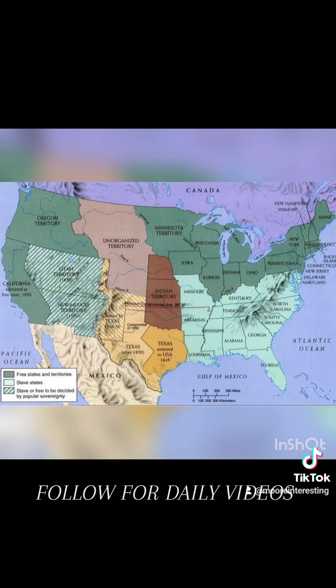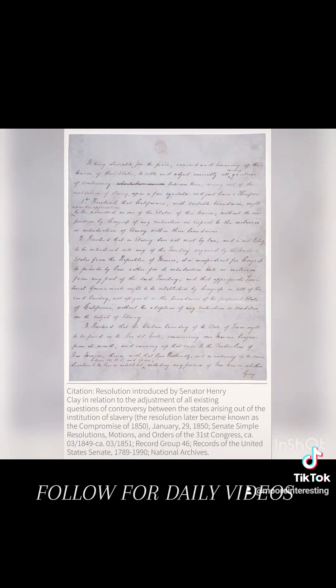The Compromise of 1850 is composed of five statutes enacted in September of 1850. The acts called for the admission of California as a free state, provided for a territorial government for Utah and New Mexico, established a boundary between Texas and the U.S., and called for the abolition of the slave trade in Washington, D.C., as well as amending the Fugitive Slave Act. This document, which was also shown first, is Henry Clay's handwritten copy of the original resolutions, which were not passed. The transcription includes Clay's resolution and the five statutes approved by Congress.